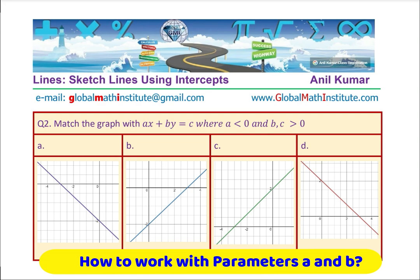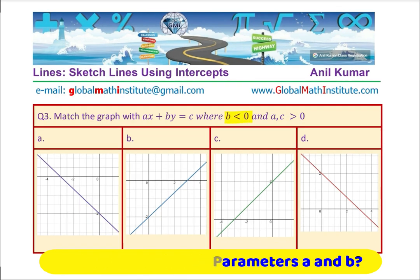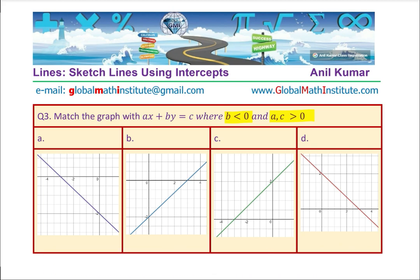Question number two: again ax plus by equals c, but here a is less than zero while b and c remain positive. Which graph is the right match? Question number three: b is less than zero and a and c are greater than zero — another combination to consider. Answering these questions will help you understand how to relate equations with their graphs.